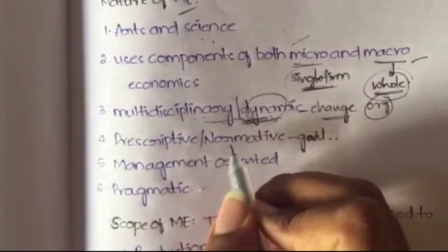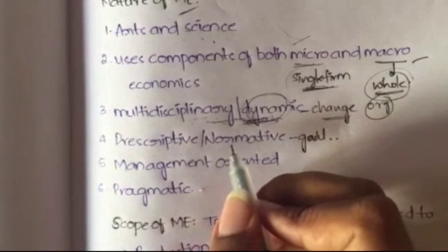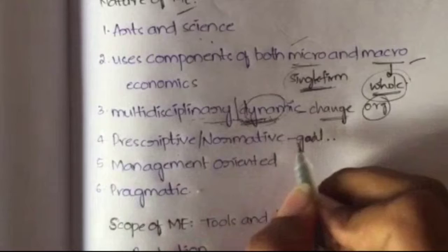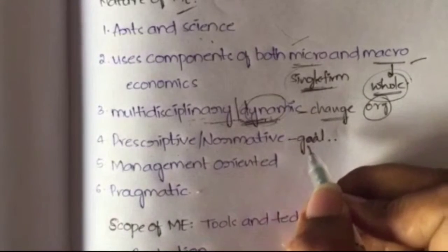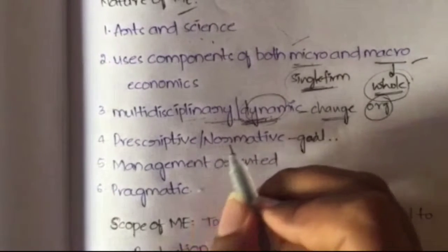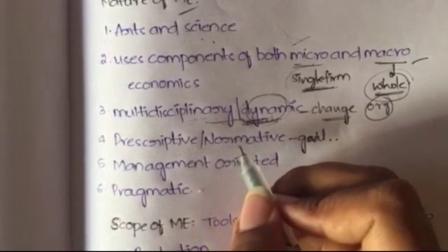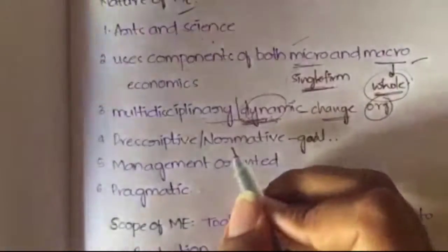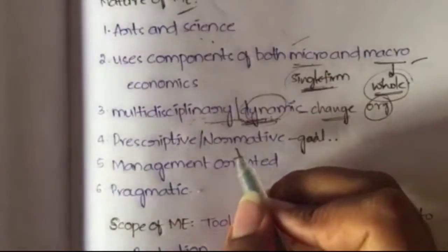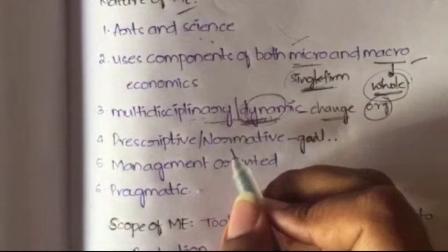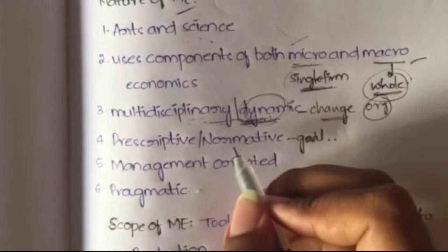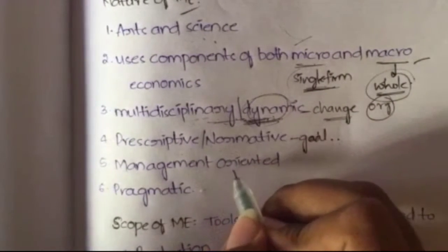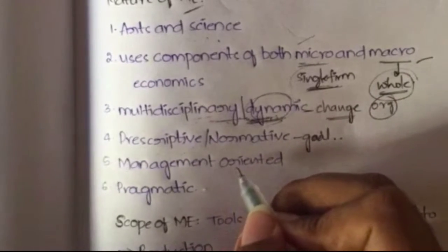The next aspect is that it is prescriptive or normative, meaning managerial economics always focuses on goal achievement and deals with practical situations. It is also management oriented — it is used as a tool for management on how to spend, earn, and save money.